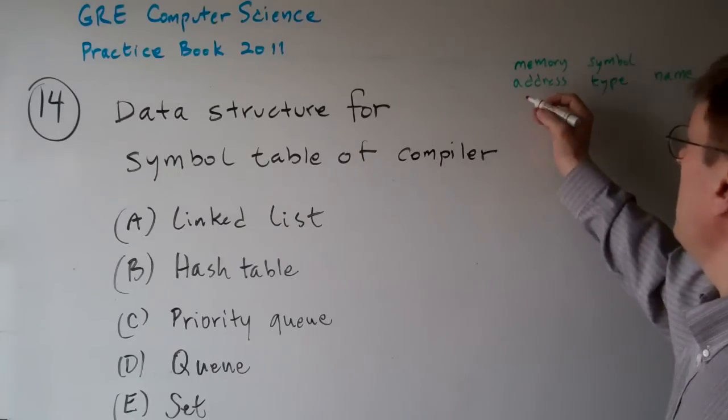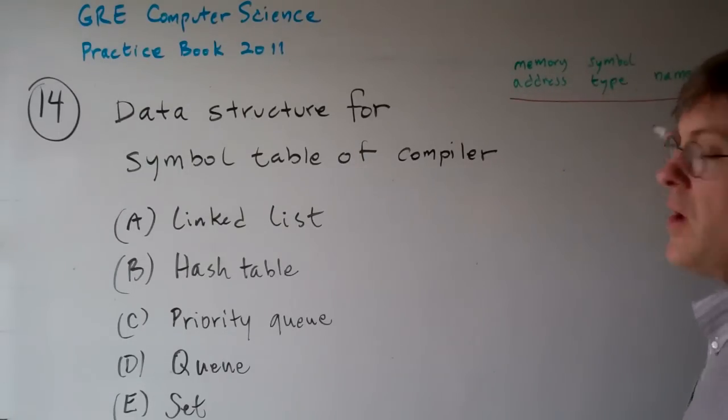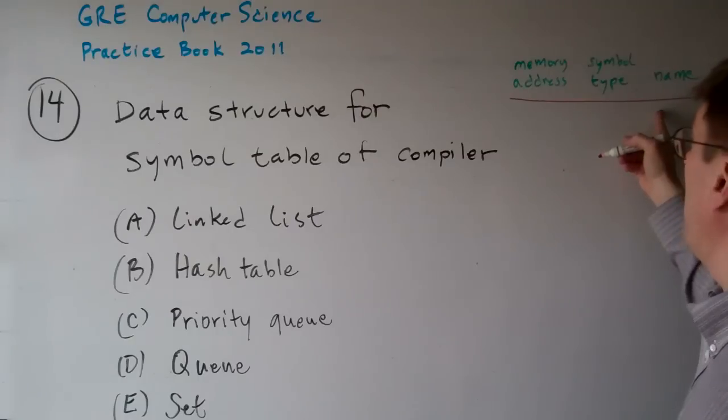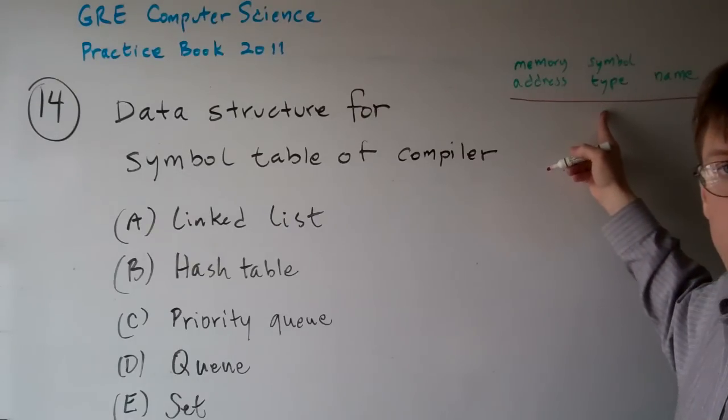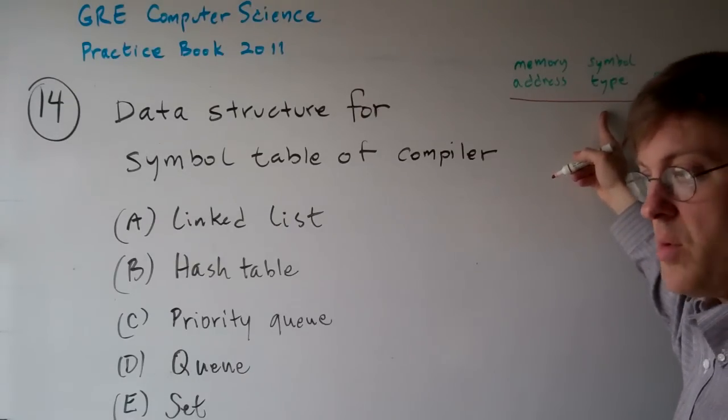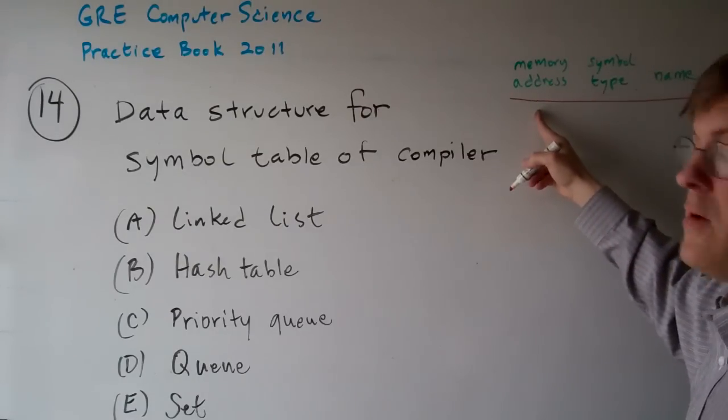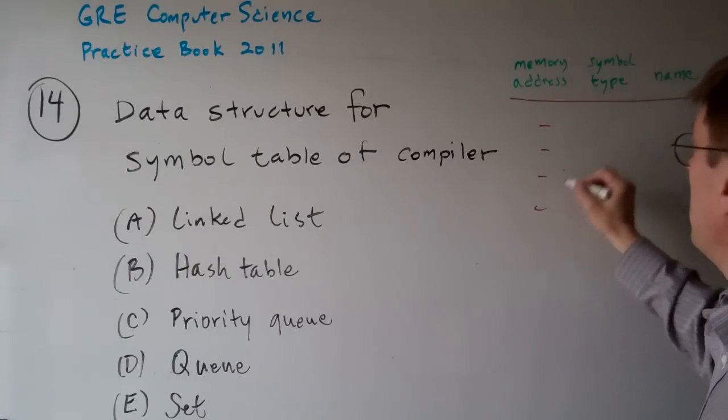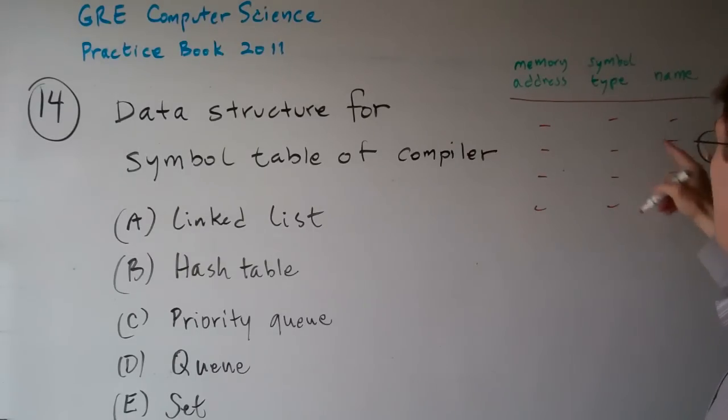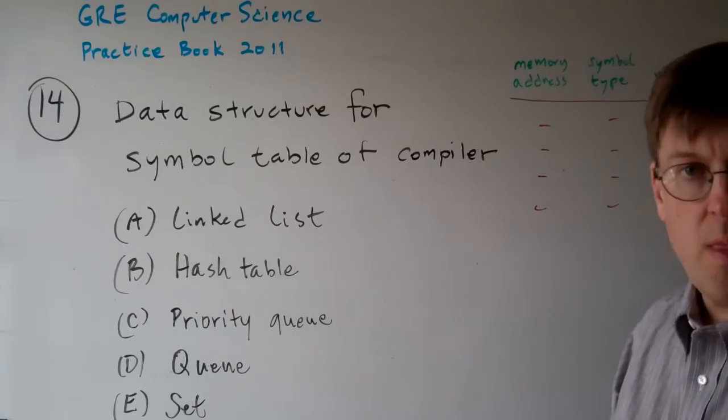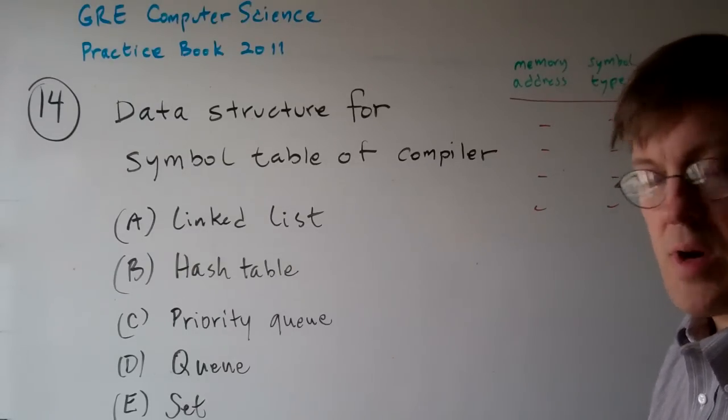A symbol table basically is a list of all of the names used by a compiler, the type of structure that it is, data or program or whatever, and then the memory address. So it's basically a list of all these symbols that the compiler's got to keep track of.